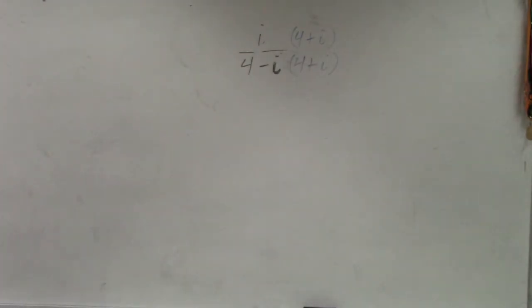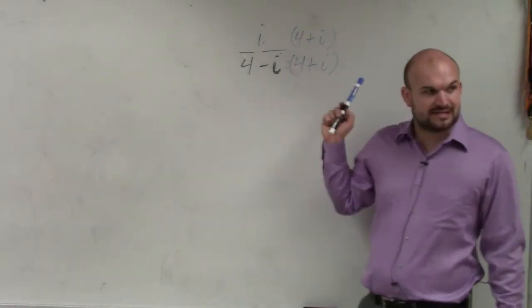The reason why the conjugate works is if you remember when we were factoring using the difference of two squares, when you have a binomial multiplied by its conjugate, you get the difference of two squares. If I FOIL this out,